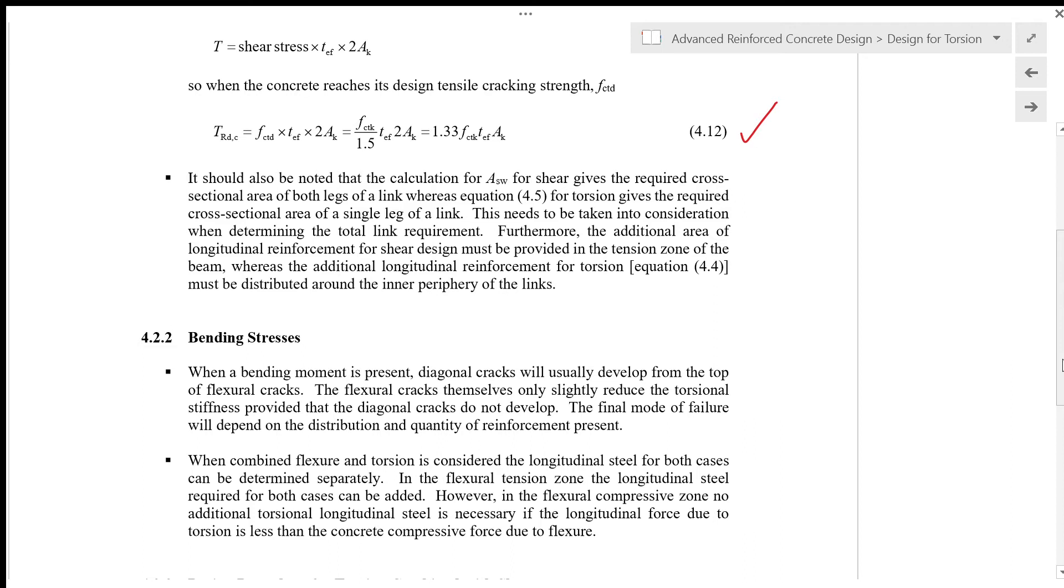The final mode of failure will depend on the distribution and quantity of reinforcement present. When combined flexure and torsion is considered, the longitudinal steel for both cases can be determined separately. In the flexural tension zone, the longitudinal steel required for both cases can be added.